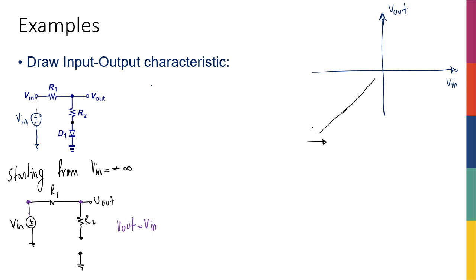For clarity, I'll call the node across the diode Vx and plot it in green alongside Vout in black. Because the diode is off there is no current, so the voltage across R2 is also zero, meaning Vx is also equal to Vin. So both Vout and Vx follow the line Vout = Vin until Vx reaches the threshold voltage Vd_on.